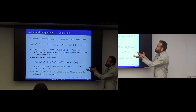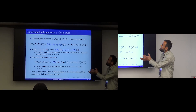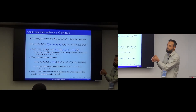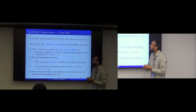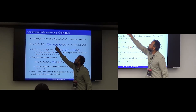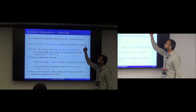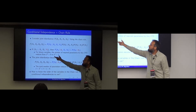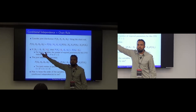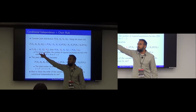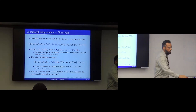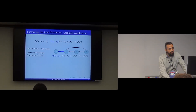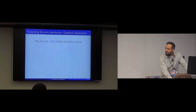This is somewhat simplistic but becomes challenging when working with many variables, because first you need to know in what order to use the chain rule, and second you may have many conditional independencies — which ones to use and when. A graphical visualization can help.